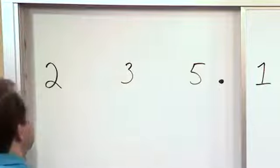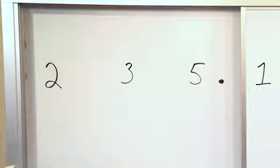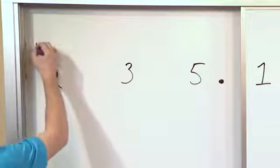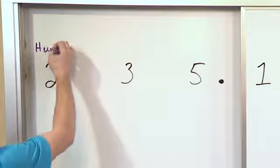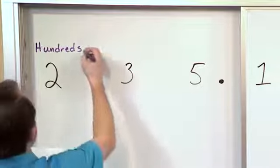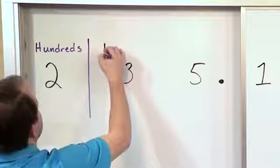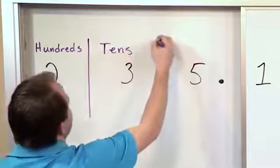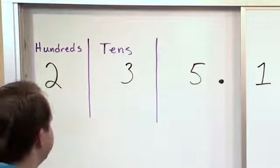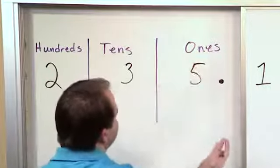So let's do some labeling. We have three digits on the left-hand side of this decimal point. The third digit to the left — we already talked about it — this is the hundreds place. So that's 200. The three is called the tens place. Every number here is worth 10, and since we have three, that's worth 30. And this digit is called the ones place, but since we have five of them, this is really worth five.